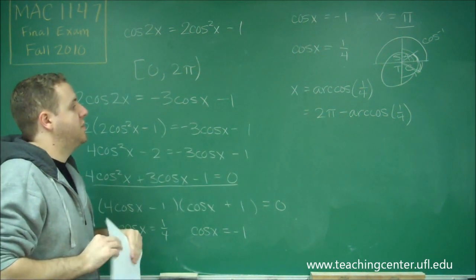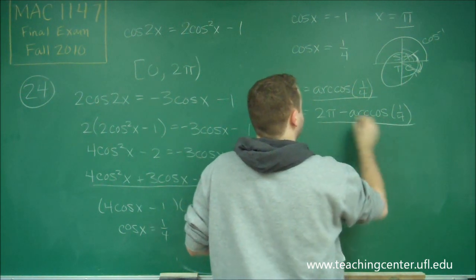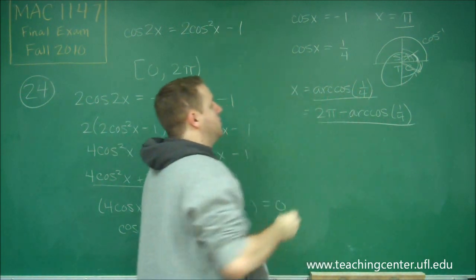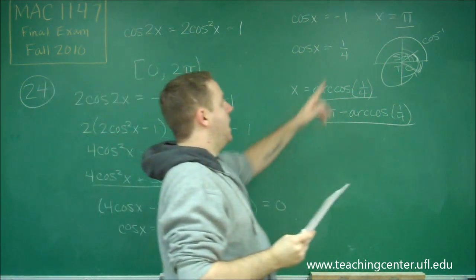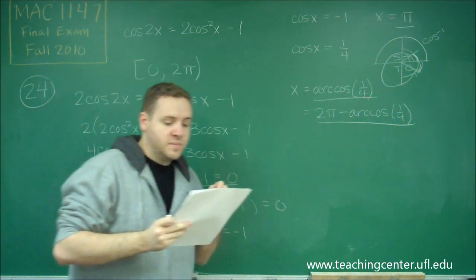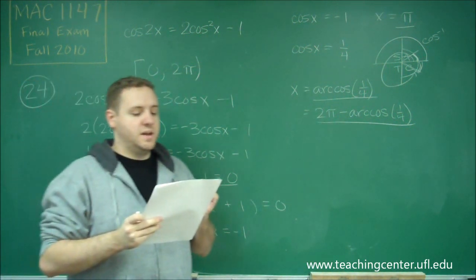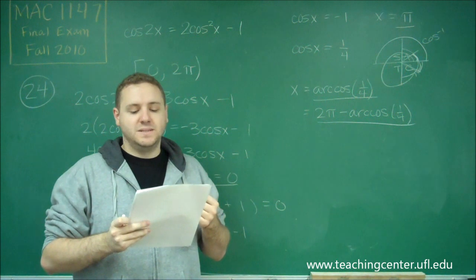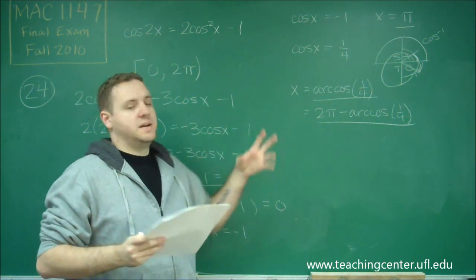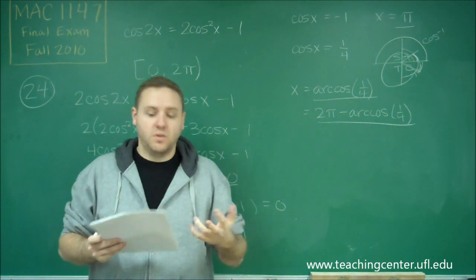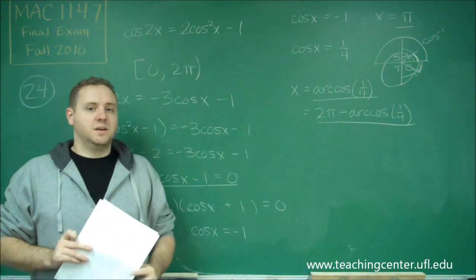So we have three total solutions: arc cosine of 1/4, 2π minus arc cosine of 1/4, and x equals π. That gives us answer choice D. The answer choices write arc cosine as cosine inverse, but that's the same thing, so the answer is D.